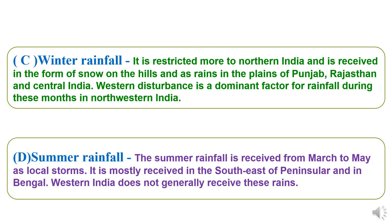The fourth monsoon is summer rainfall, received for the period March to May as local storms. This rainfall is mostly received in the southeast of the peninsula and Bengal. Western India regions generally receive these rains. These are the four types of monsoons in India.